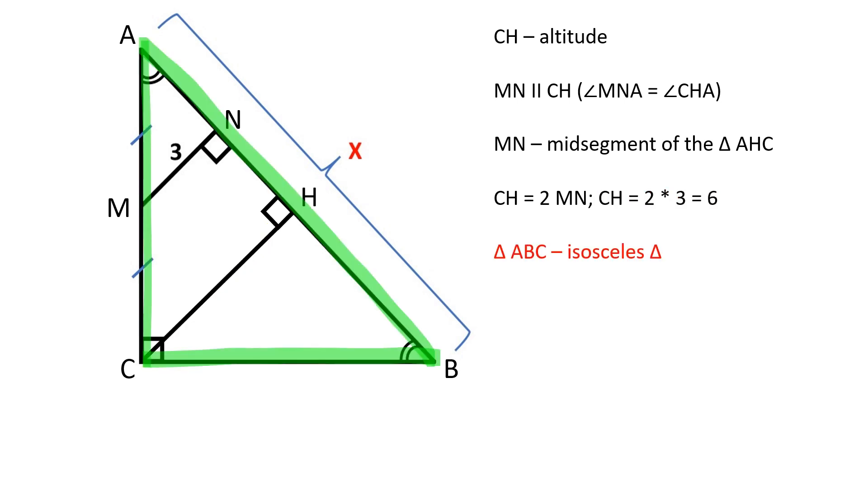Since triangle ABC is an isosceles triangle, CH is also a median. Since the median to the hypotenuse equals half of the hypotenuse, AB equals 2 times CH, which is 12.